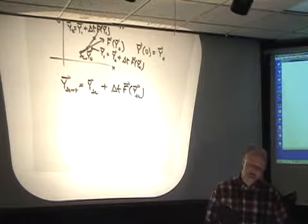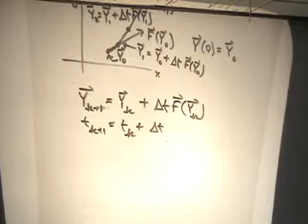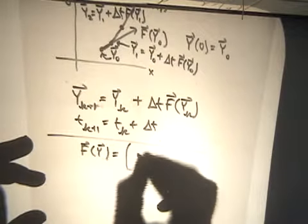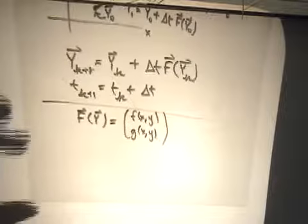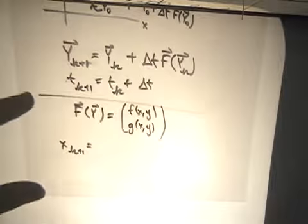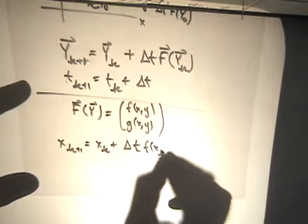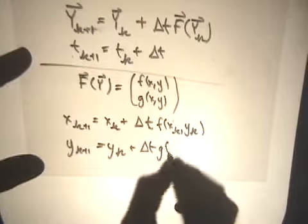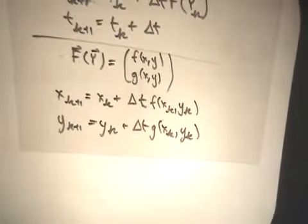We also need to update t: t-new equals t-old plus delta t. The book writes these in scalar form as well. If you think of f(y) as having components little f(x,y) for the first component and little g(x,y) for the second, you can write an equivalent form for Euler's method as two scalar recurrence relations — it's like two one-dimensional Euler's methods put together. You want to be flexible and think of it either way.